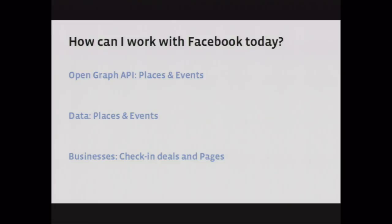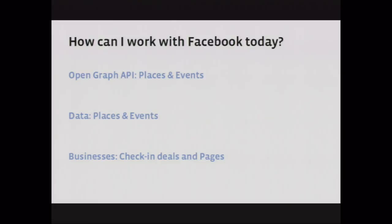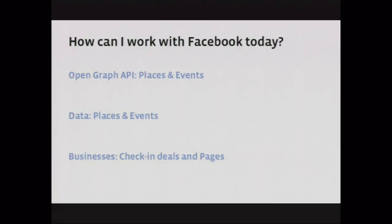To finish up: our team will be around for most of the day, and if you want engineering specifics we have a talk this afternoon. There are three areas where you can work with Facebook today. Number one, we'd love to get everyone using our Open Graph API for places and events — we're adding categorization, neighborhood data, and more coming soon. We're also interested in data partnerships — if you have a dataset you'd like available to Facebook users, come see us. And finally, last fall we launched Check-In Deals, which lets a page owner create a deal promoting a product or offer when people check into their place. There are a lot of opportunities for people running local businesses around our Pages product.